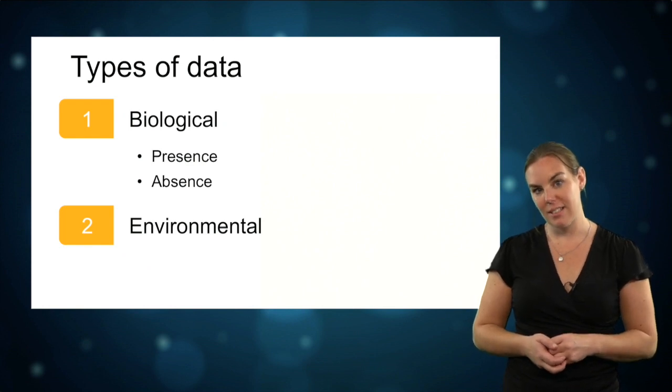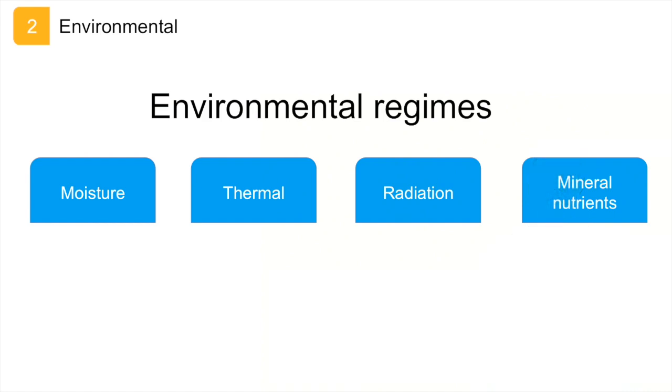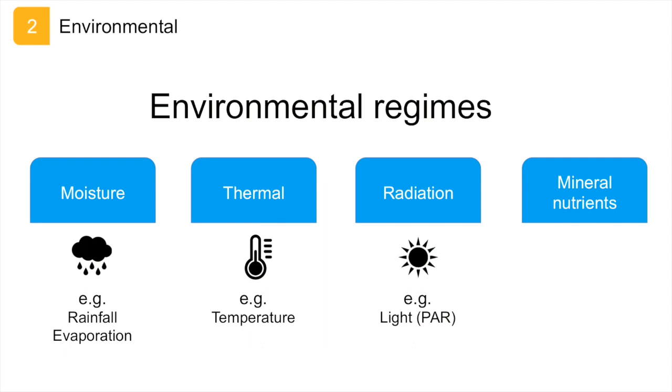The other type of data that you need is environmental data. This is data that tells you about the environmental conditions of the places where your species is present or absent. The most common types of environmental variables that are used in species distribution modeling are described by four classes of physical conditions called the primary environmental regimes: moisture, thermal, radiation, and mineral nutrients. The moisture regime is mostly described by measures of rainfall and evaporation. The thermal regime by temperature measures. The radiation regime refers to solar radiation or sunlight which is usually measured by the photosynthetically active radiation or PAR. This is the spectral range of solar radiation that photosynthesizing organisms such as plants and algae are able to use in the process of photosynthesis. This spectral region corresponds more or less with the range of light that is visible to the human eye. The mineral nutrients regime is determined by soil type.